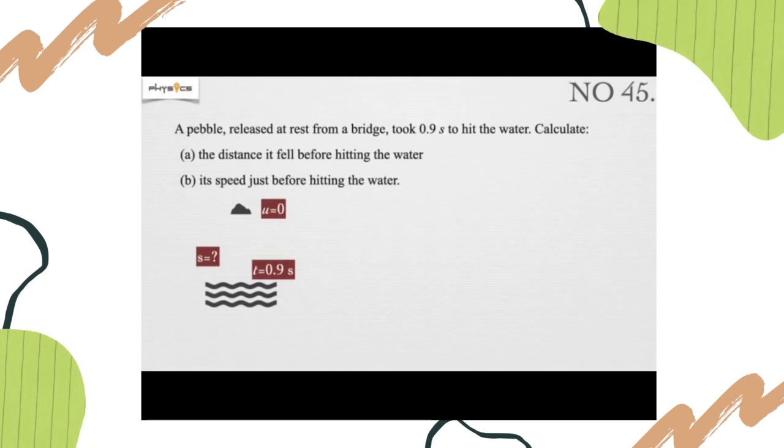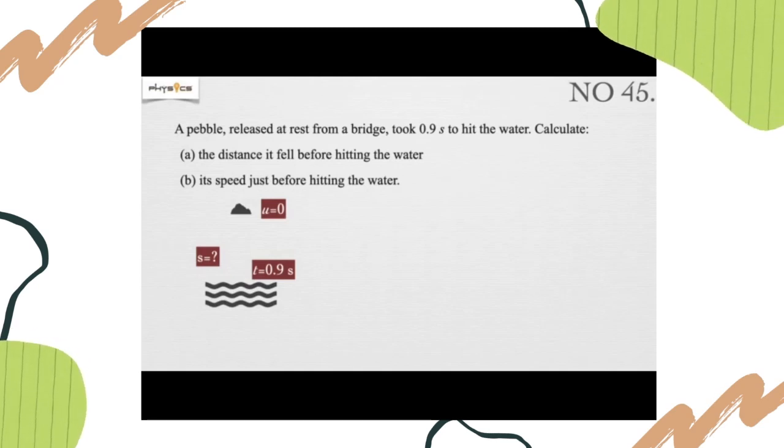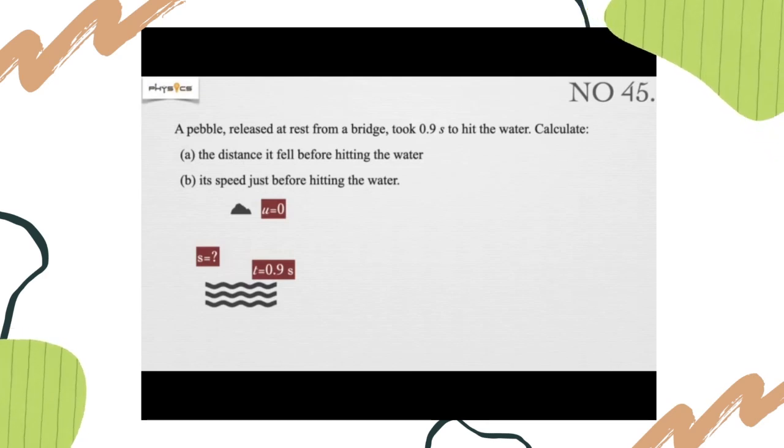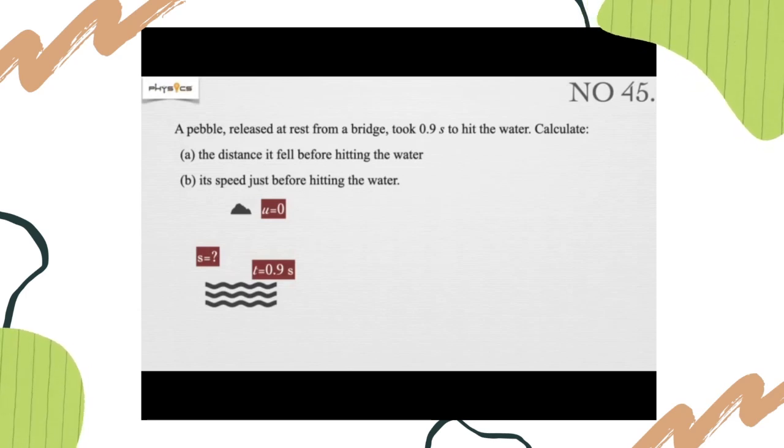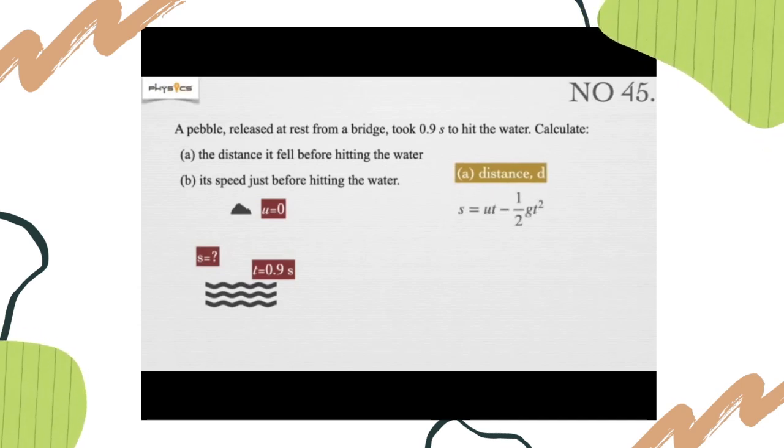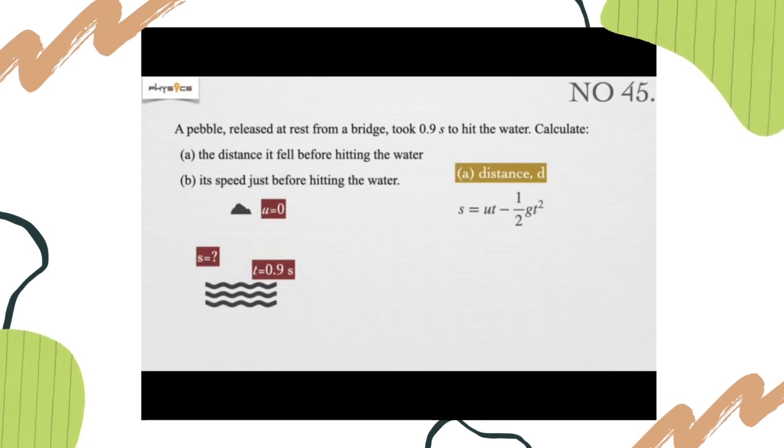What is the initial velocity of the pebble? Yes, it is equals to 0 because it is released at rest from a bridge. We need to find the displacement first since we have the time to reach the water is 0.9 seconds. How to find S since we have U, T, and G? To answer question A, we use the equation S equals UT minus half GT squared. We substitute U with 0, G with 9.81, and T equals 0.9 seconds, and we get S displacement equals negative 3.97 meters.